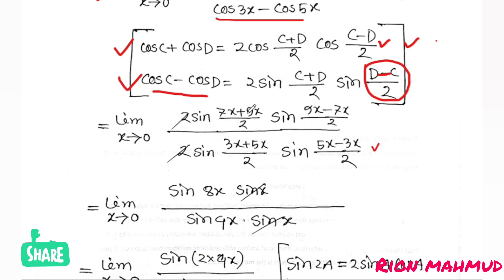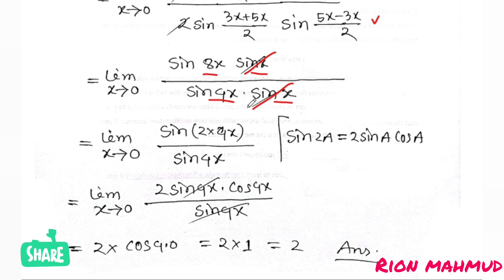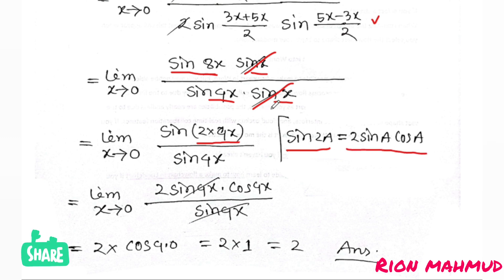Simplifying: in the numerator, 7x plus 9x equals 16x, so 16x/2 gives 8x. And 9x minus 7x equals 2x, so 2x/2 gives x. In the denominator, 3x plus 5x equals 8x, so 8x/2 gives 4x. And 5x minus 3x equals 2x, so 2x/2 gives x.